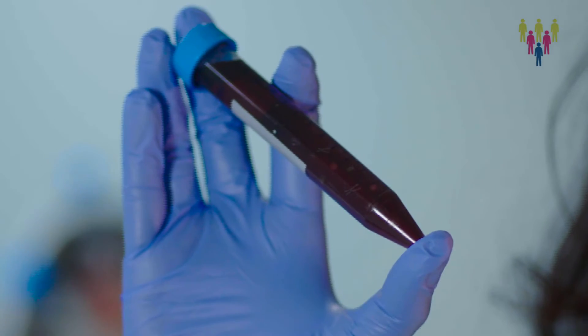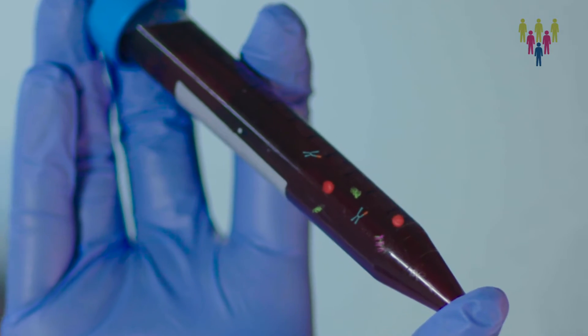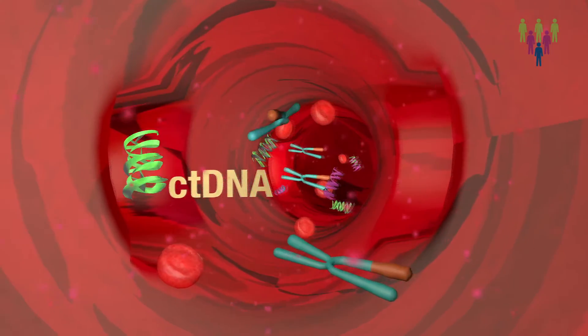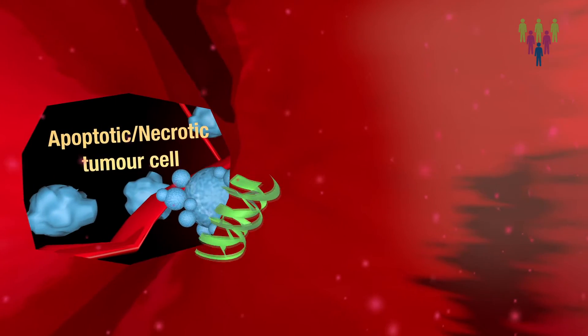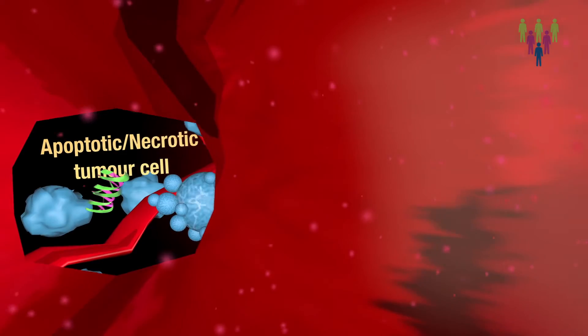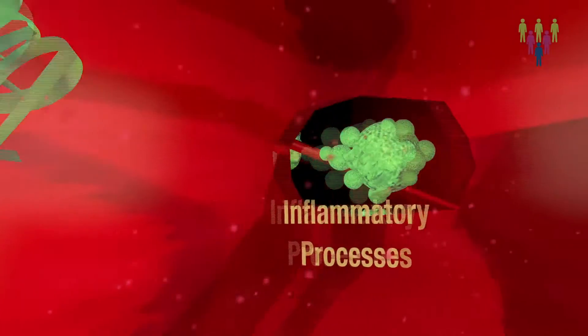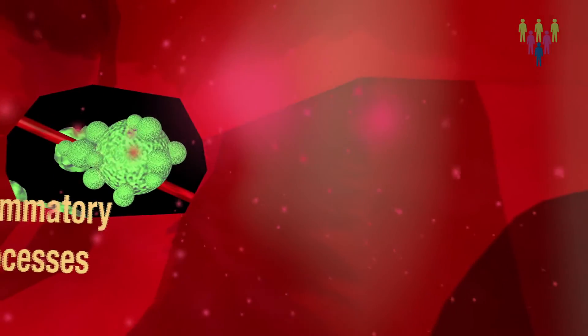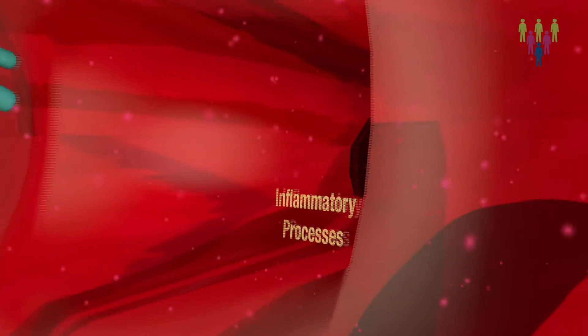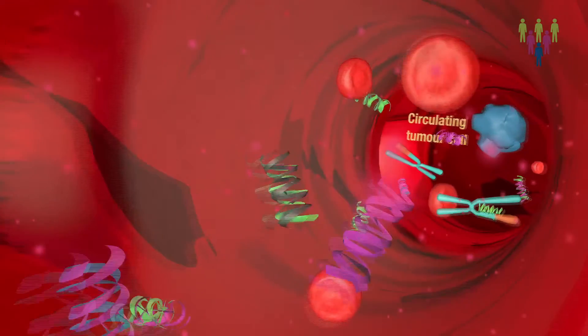Solid cancers release circulating tumor cells, micro vesicles such as exosomes, and cell-free circulating tumor DNA in the bloodstream. The term liquid biopsy has been adopted for the analysis of all these circulating biomarkers. The majority of circulating tumor DNA is derived from apoptotic and necrotic tumor cells that release their fragmented DNA into the circulation. Cell-free DNA is also released by non-malignant host cells as a consequence of physiological tissue turnover or inflammatory processes, and this normal cell-free DNA dilutes the circulating DNA of tumor origin in cancer patients.